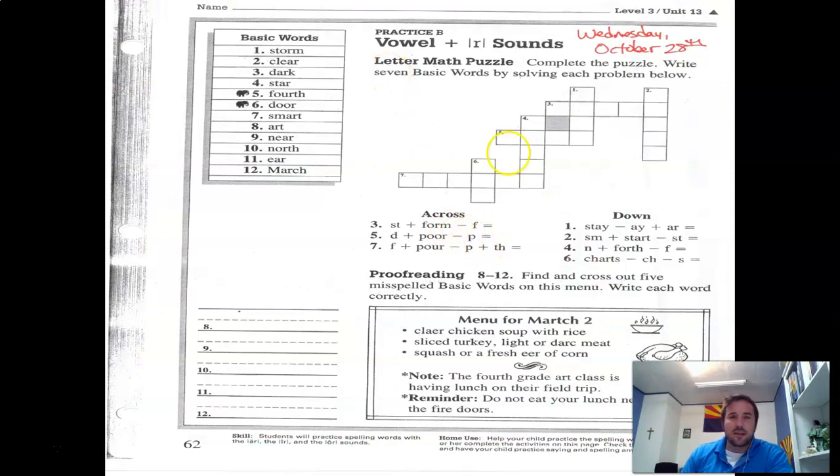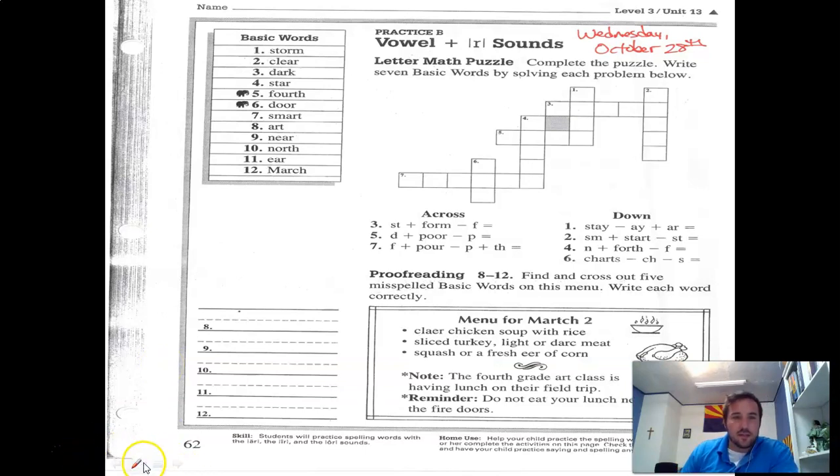Here's what I think can help us. We're dealing with a little bit of math and spelling, but I think you've done this before. You take ST plus FORM and you take away the F. So if you take off the F, you're left with STORM, right? So STORM, because you subtracted the F, and that goes in three across.